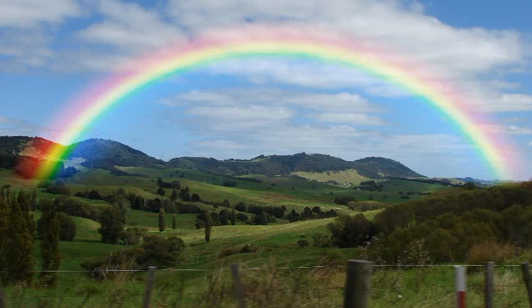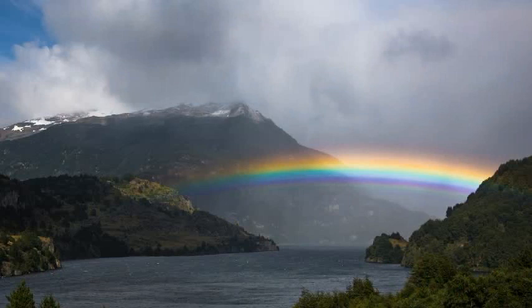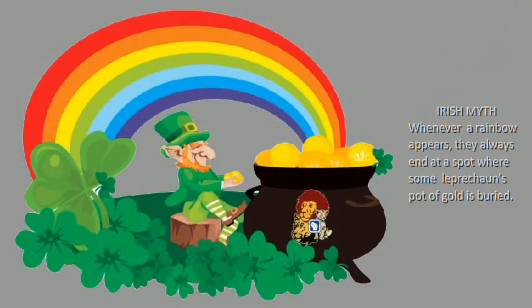Nature's most amazing gift to mankind is perhaps the rainbow. It looks so beautiful that from ancient times a type of myth has developed regarding rainbow. An Irish myth says that whenever a rainbow appears they always end at a spot where some leprechaun's pot of gold is buried. However, everybody likes to see the rainbow. In this video I am going to explain the physics behind the formation of a rainbow.